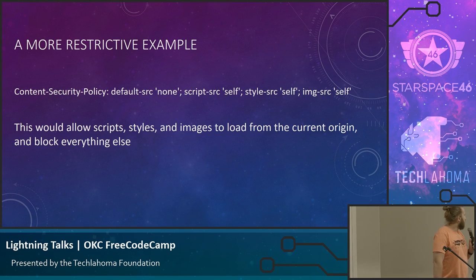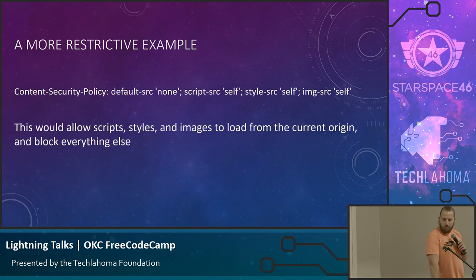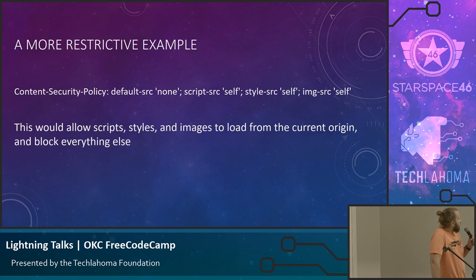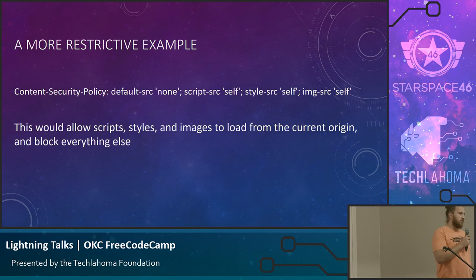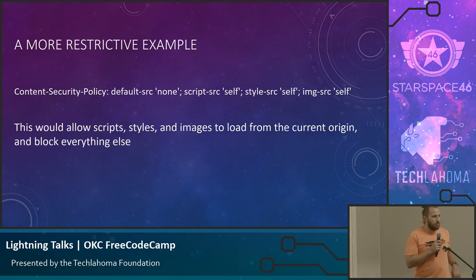Here's a more restrictive example. Here we set the default source to none. None is basically going to block the loading of that type of resource. And then for scripts, styles, and images, we declare that those just have to be loaded via the current origin with the self keyword. These are not inherited, so if you specify a default source of none, that will block everything unless you explicitly say that you want to load that type of resource and specify how.